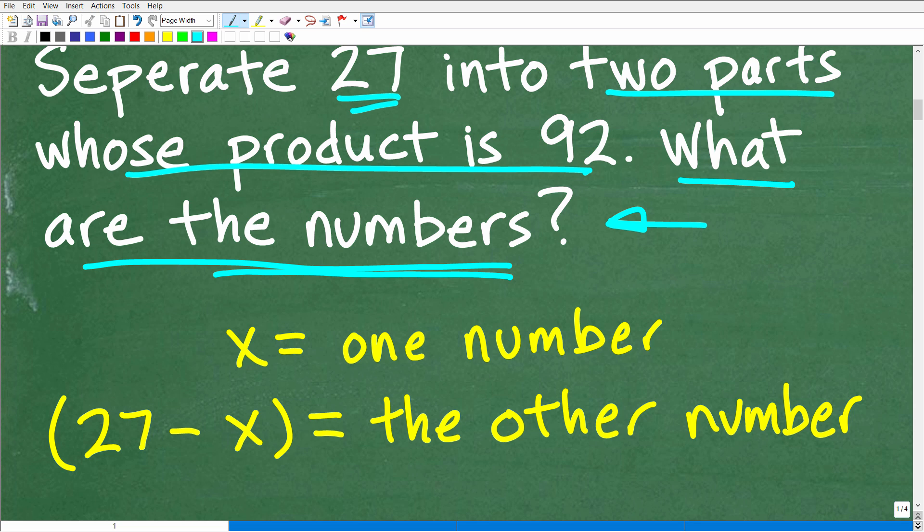not only do I do word problems in those courses, I do all the kind of supportive instruction that you're going to need to know as well. All right. So here we have two expressions, X is equal to one number and 27 minus X could be the other number, right? So we're going to separate 27 into these two different parts right here.